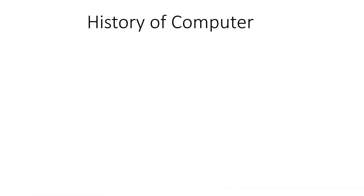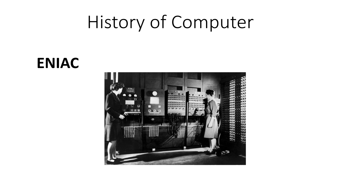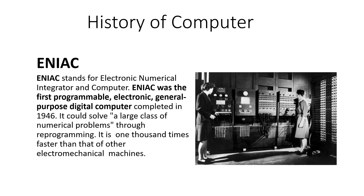ENIAC — Electronic Numerical Integrator and Computer — is one of the first generation computers. ENIAC was the first programmable electronic general purpose digital computer, completed in 1946. It could solve a large class of numerical problems through reprogramming and was one thousand times faster than other electromechanical machines of that time. However, it was very large in size, consumed more electricity, and produced more heat.